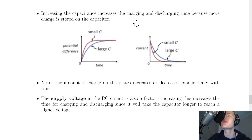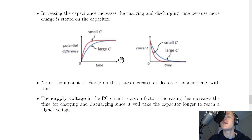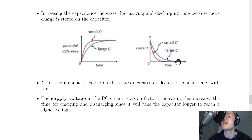Increasing capacitance also increases charging and discharging time because more charge is stored. For potential difference against time, a smaller capacitance reaches maximum voltage in a shorter time, while a larger capacitance takes longer. For current against time, a smaller capacitance value means current reaches zero more quickly, whereas a larger capacitance value means the current takes longer to reach zero.